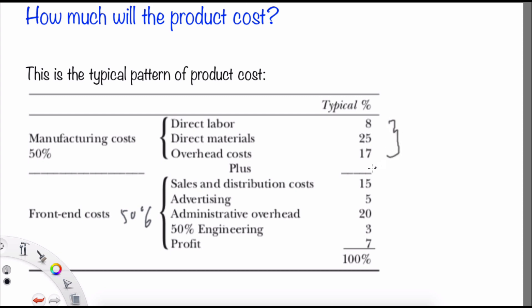we have three classifications. The first is the direct labor, about 8%. The direct material, 25%. And the overhead cost is 17%. So the direct material is 50% of the manufacturing cost.